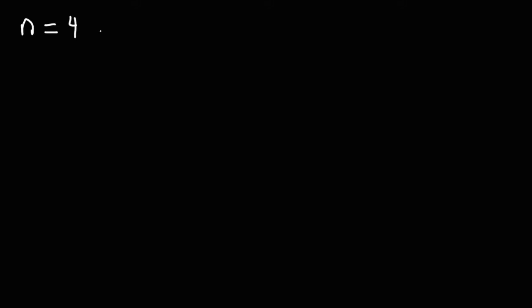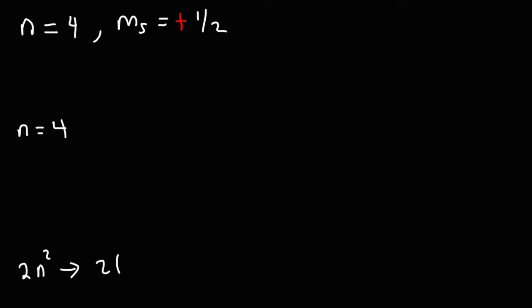Let's move on to our next example. Let's say that n is 4 and ms, the electron spin, is positive one-half. What is the maximum number of electrons with these two quantum numbers? The answer is going to be 2n squared: 2 times 4 squared. 4 squared is 16 times 2, so there's a maximum of 32 electrons in the 4th energy level. Half of them will have a spin of plus one-half, so the answer is going to be half of 32 — it's going to be 16 electrons.